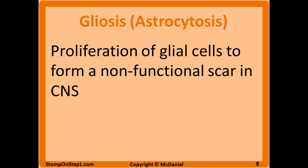Scar formation in the central nervous system and brain is a little different from the rest of the body. Gliosis, or astrocytosis, is the way healing takes place in the CNS following injuries like a stroke. It involves proliferation of glial cells — mainly astrocytes — to form a non-functional scar at the site of injury. Astrocytes fill the injured area with intermediate filaments and extracellular matrix that is non-functional brain tissue.